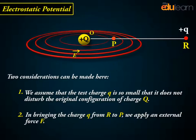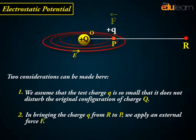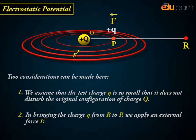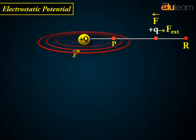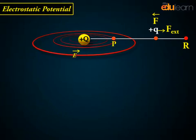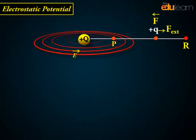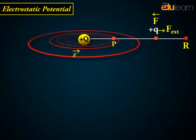In bringing the charge q from R to P, we apply an external force F-ext, just enough to counter the repulsive electric force. This means there is no net force on or acceleration of the charge q when it is brought from R to P.